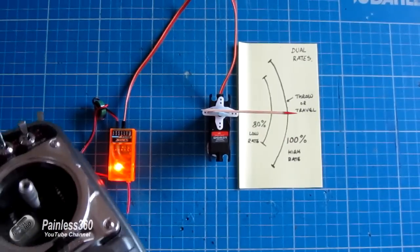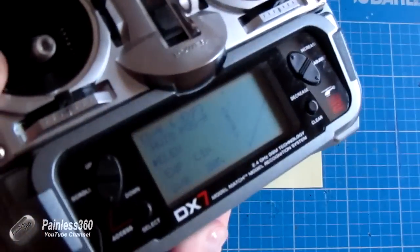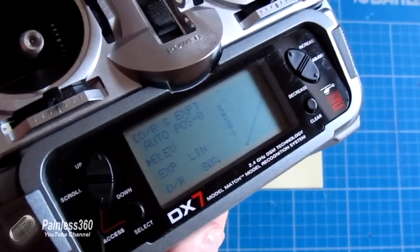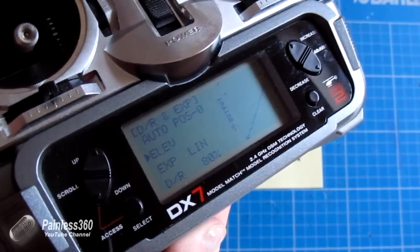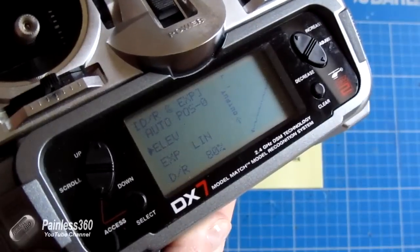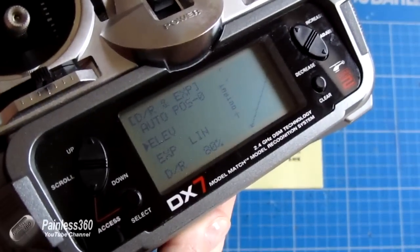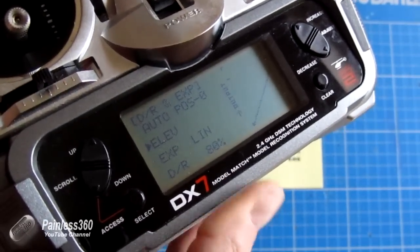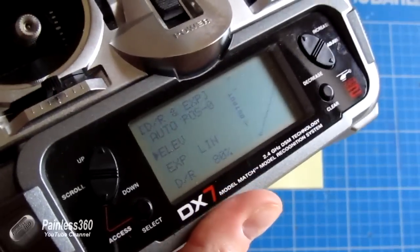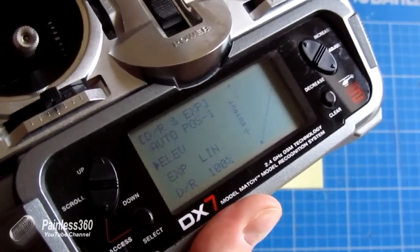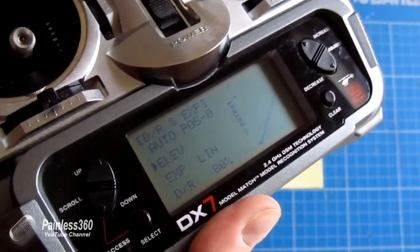So how do you actually set this up? Well, if I just show you the screen of my trusty DX7, you can see I'm in the dual rate and expo menu, and we're looking at the elevator channel. There's no exponential set, but dual rate is set to 80%. If I flick the switch on the corner of the radio, it flicks between a hundred and eighty percent.